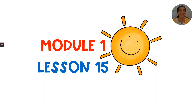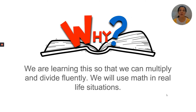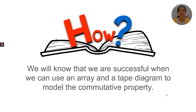Welcome to Module 1, Lesson 15. Let's get started. Today we will be learning how to model the commutative property of multiplication. We are learning this so that we can multiply and divide fluently. We will use math in real-life situations. We will know that we are successful when we can use an array and a tape diagram to model the commutative property.